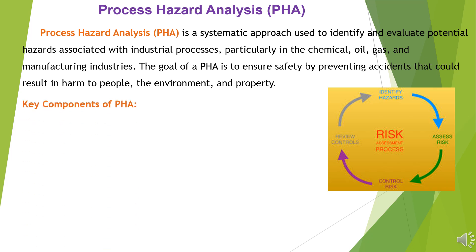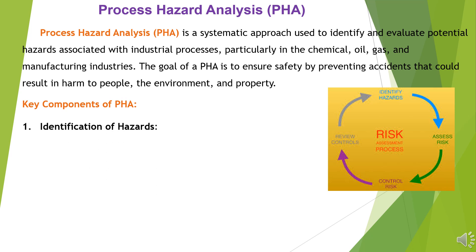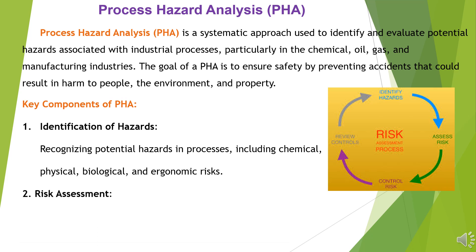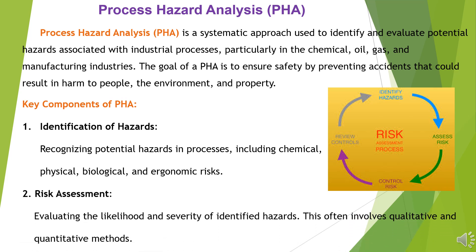Key Components of PHA. 1. Identification of hazards: recognizing potential hazards in processes, including chemical, physical, biological, and ergonomic risks. 2. Risk Assessment: evaluating the likelihood and severity of identified hazards. This often involves qualitative and quantitative methods.